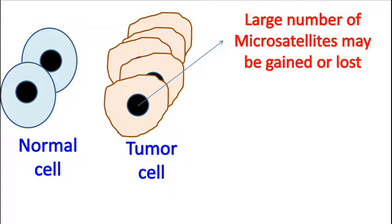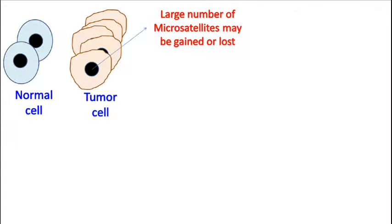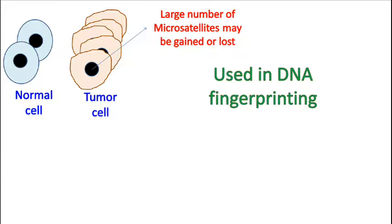Hence, the genetic profile of an abnormal cell will be different as compared to the normal cell. Besides this, microsatellites are also used in a popular technique called DNA fingerprinting.